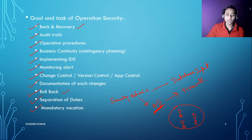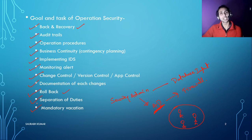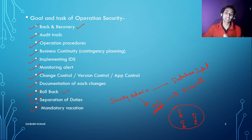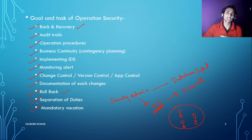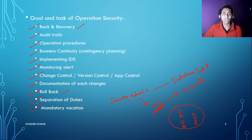We have also talked about mandatory vacation. After some period of time, you must send an employee on a mandatory vacation — for example, 10 days — during which they are not allowed to contact other employees or enter the company. During those 10 days they are completely disconnected, and someone else takes their place to review all the processes and responsibilities they have been handling, checking whether everything is being fulfilled properly.